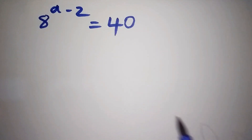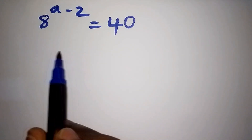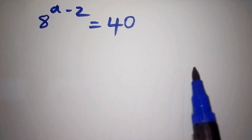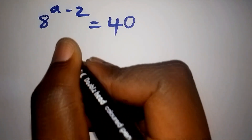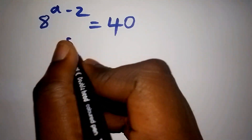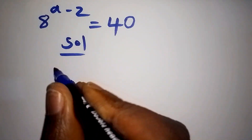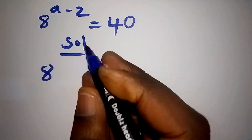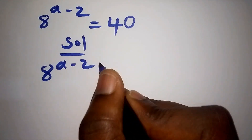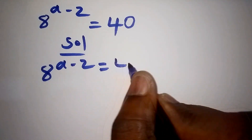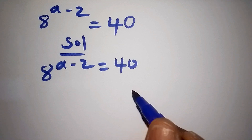Hello, do you know how to solve such an amazing tricky maths question? Worry not, I will take you step by step on how to solve it. So let's now start with our solution. We have 8 to the power of A minus 2 equals 40. So how do we find the value for A?